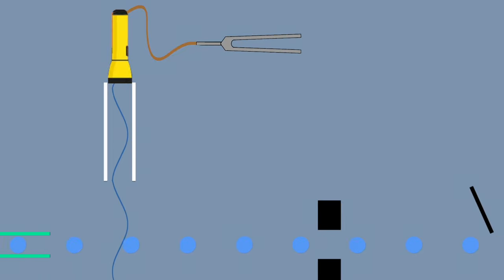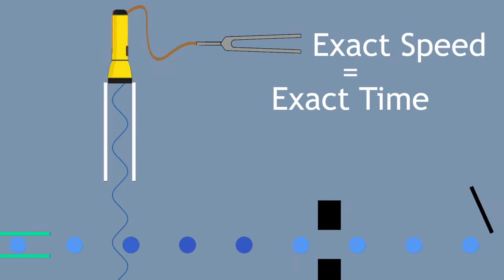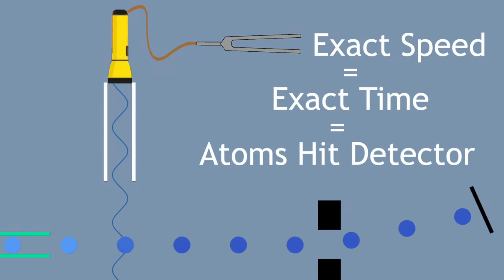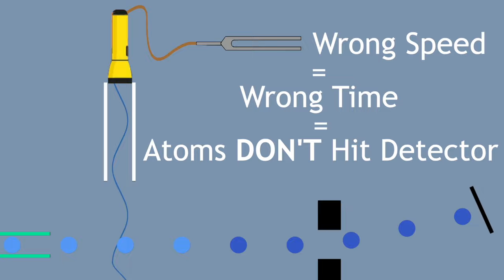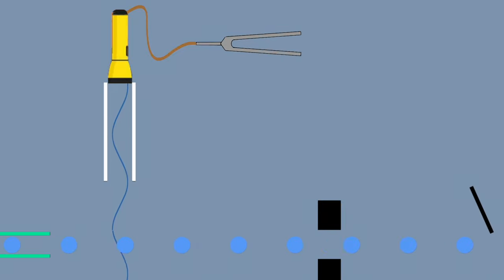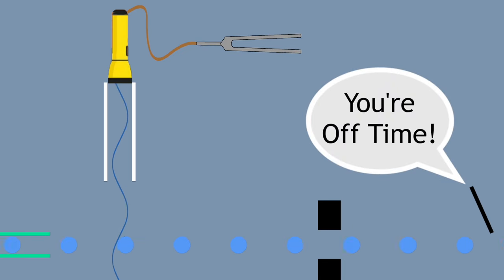So what this means is that if the quartz is vibrating at exactly the correct speed, keeping exactly the correct time, atoms will hit the detector. But if the quartz is just a teensy bit too fast or too slow, atoms won't hit the detector. So the detector is the clock's way of knowing if the clock is keeping super-accurate time or not.